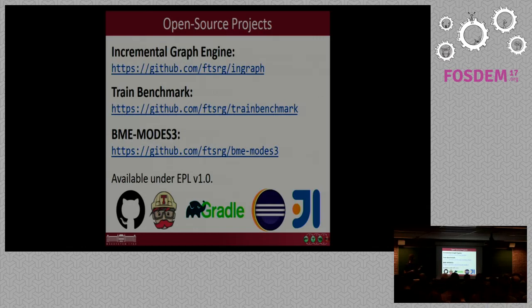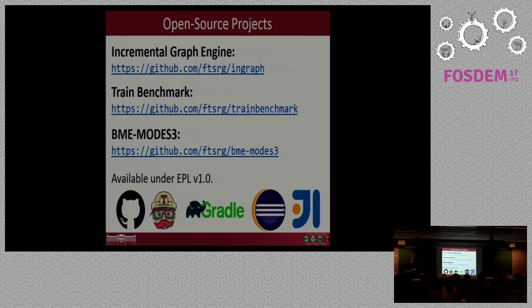So to summarize, I presented some open source projects. The InGraph project which allows you to evaluate incremental graph queries in OpenCypher. There is a Train Benchmark system that allows you to benchmark such queries on realistic large data sets. And then we also have a very interesting demonstrator called the MODES3 project, which is the model-based demonstrator for smart and safe systems. This is a demonstrator that revolves around the idea of a cyber-physical system and it uses a model railway and a lot of real-time computation to make sure that the model railway works safely. These are all available on GitHub with continuous build and licensed under the Eclipse Public License. Thank you for your attention.